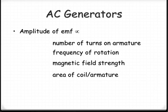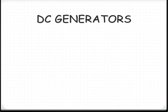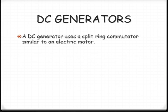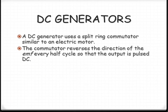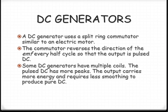How would this vary compared to a DC generator? A DC generator uses a split ring commutator, much like an electric motor. This is a key point: it reverses the direction of the EMF every half cycle so that the output is pulsed DC. Some DC generators have multiple coils, much like the motor, which gives multiple peaks and a smoother output.